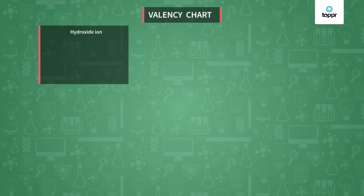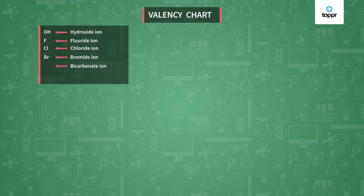The first group contains the polyatomic ion hydroxide (OH), fluoride (F), chloride (Cl), bromide (Br), bicarbonate — carbonate is CO3 and bicarbonate is HCO3, also called hydrogen carbonate, which is a polyatomic ion — and then nitrate (NO3), where 'nitr' stands for nitrogen and 'O' stands for oxygen. The entire group has valency 1, specifically minus 1, because all of them accept electrons to be stable.